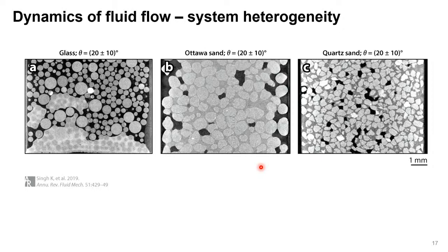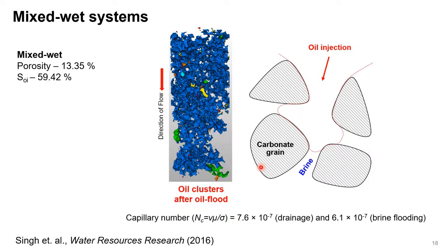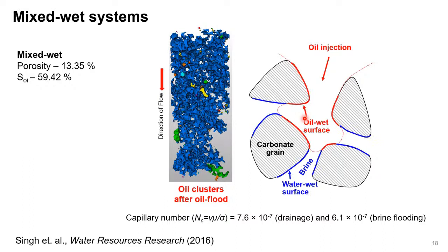We then made the system more complex — more relevant for the petroleum industry — looking into mixed-wet systems. In mixed-wet systems, oil migrates from source into reservoir rocks. The reservoir carbonate rocks are generally water-wet, and as oil migrates in as a non-wetting phase, over time the surface-active components like asphaltenes get deposited on the grains where oil is touching, changing their wettability, while the rest stays water-wet.